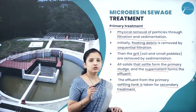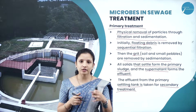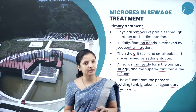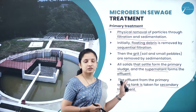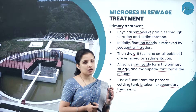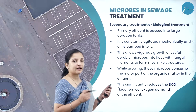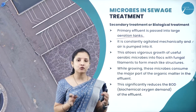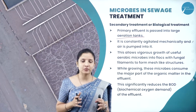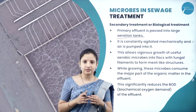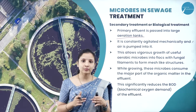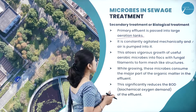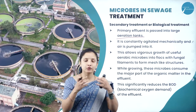In secondary treatment, only the primary effluent is treated, as it still contains lots of organic and inorganic compounds dissolved in the water. The primary effluent is passed into large aeration tanks. Secondary treatment is also called biological treatment because a lot of microbes are used there, and the tank requires lots of aeration to support the aerobic microbes that grow in it.